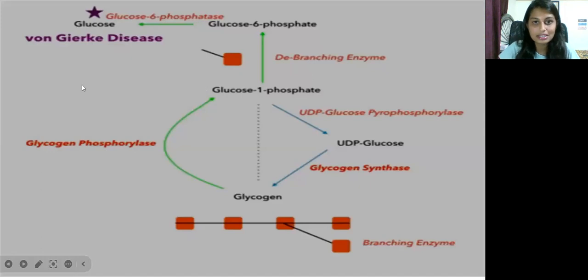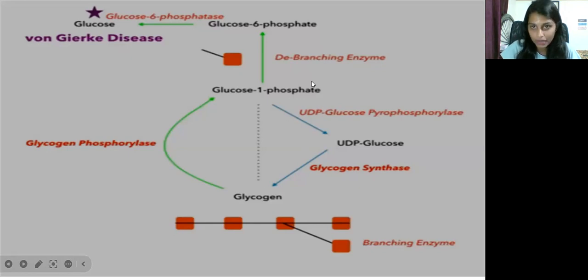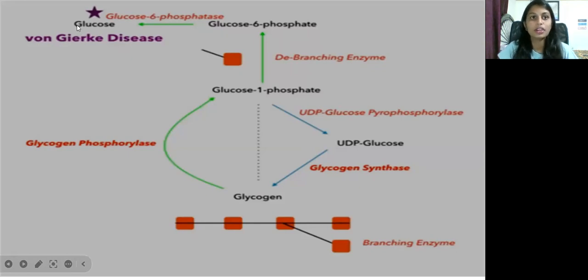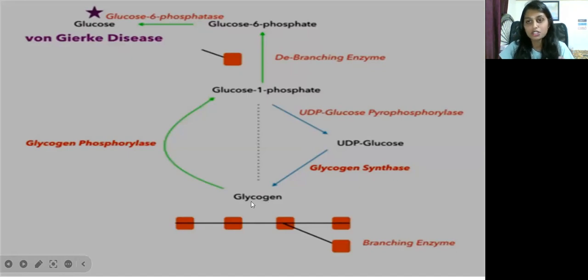Just have a look at the pathway here — this is a glycogen pathway. With the help of glycogen synthase and glycogen phosphorylase enzyme, glycogen is converted into glucose-1-phosphate. A debranching enzyme is also involved. From glucose-1-phosphate, it converts into glucose-6-phosphate, and from glucose-6-phosphate it converts into glucose. Several enzymes are involved in the conversion of glycogen to glucose.